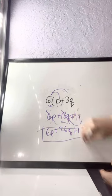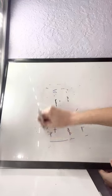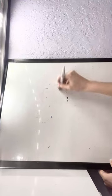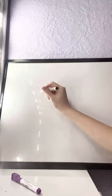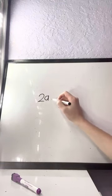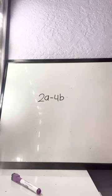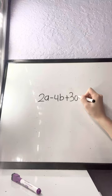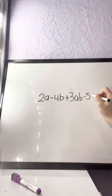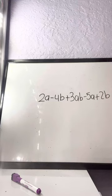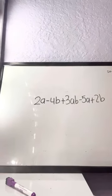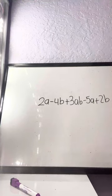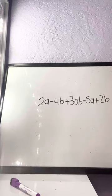And now, I'm going to try a different problem. Now, let's say I had this. Let's go back to a simple one. Let's say I had 2A minus 4B plus 3AB minus 5A plus 2B. So, in this case, all we're doing is combining like terms. So, remember, you're looking for the same last name.